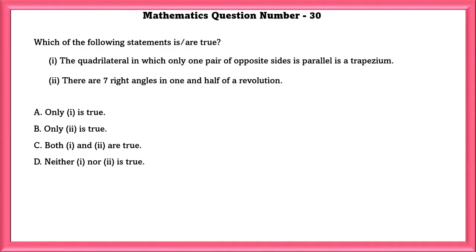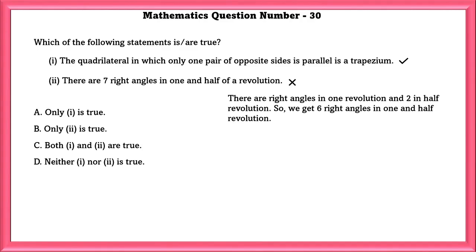Mathematics Question Number 30. Which of the following statements are true? The quadrilateral in which only one pair of opposite side is parallel is called a trapezium. Yes, that is true. There are 7 right angles in 1.5 rotation. No, there are only 6 right angles in 1.5 revolution. So the answer is A, only i is true.